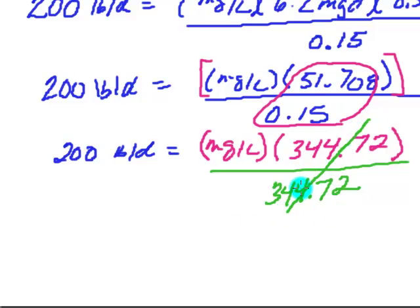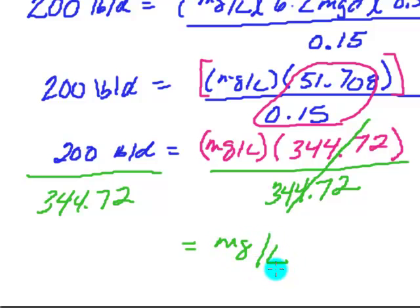But since I did it to one side, I have to go back and do it to the other side. So here is my 344.72 dividing. And what I'm going to end up with is my answer in milligrams per liter. So this is 200 divided by 344.72, and it looks like my dose at the treatment plant is about 0.58 or 0.6 milligrams per liter of chlorine.